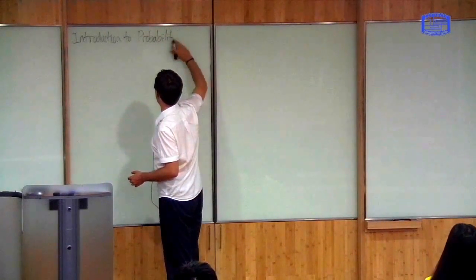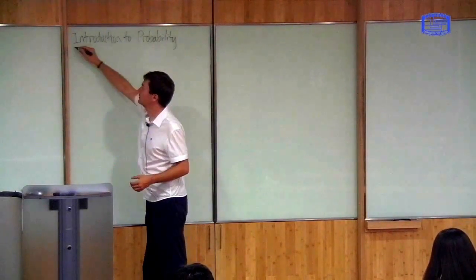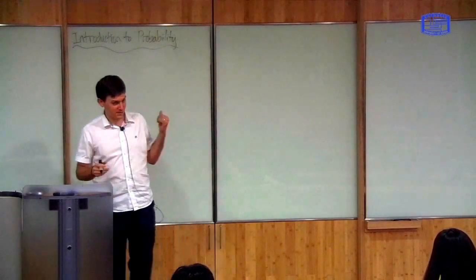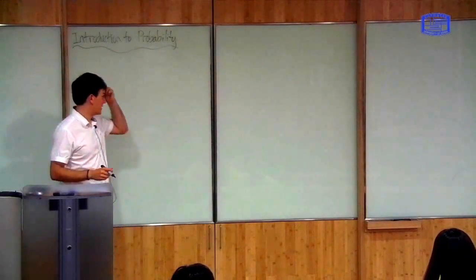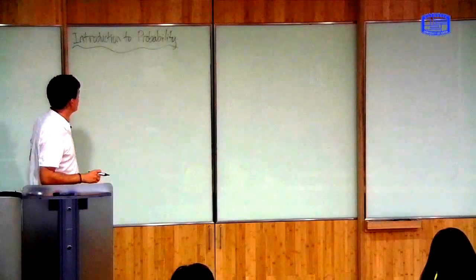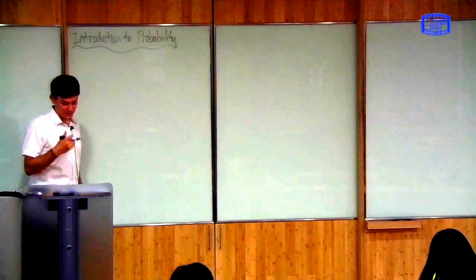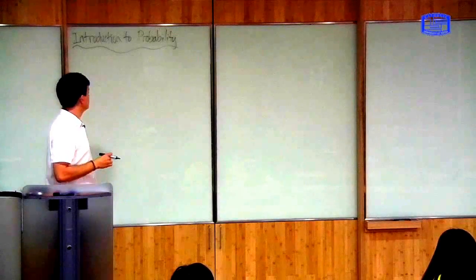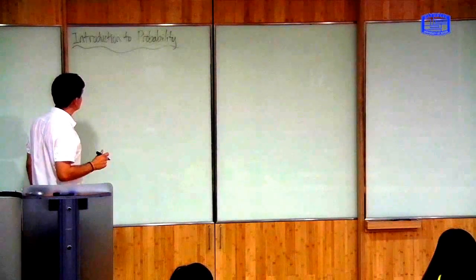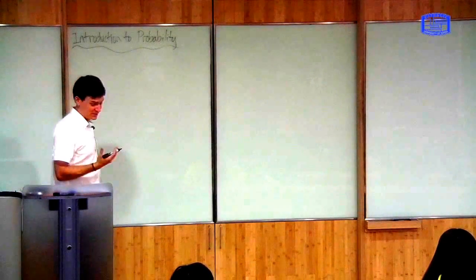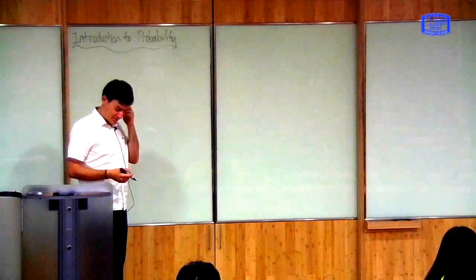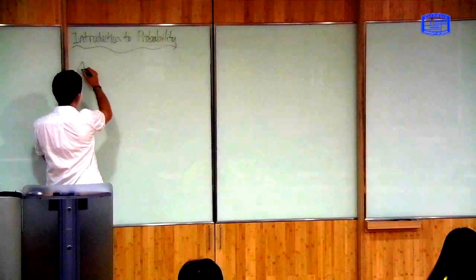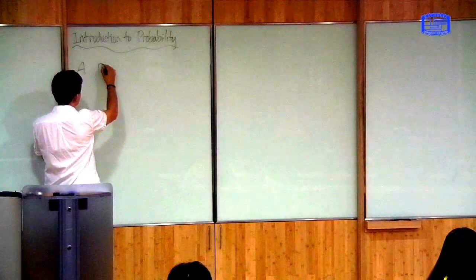So what are the mathematics of probability? This will probably take us the next few classes to describe all of the results we need from probability theory to use in statistical mechanics. The basic unit in probability theory is something known as a probability space, so I'll define that now.